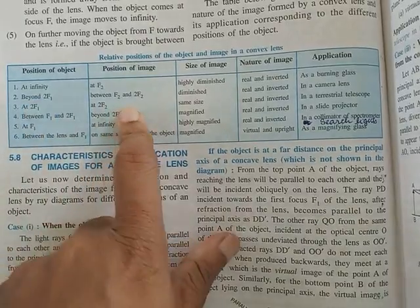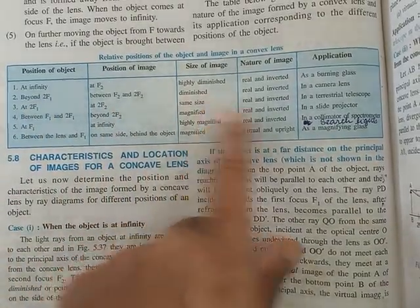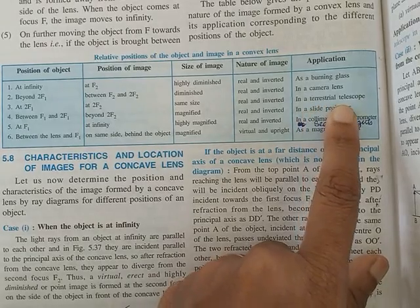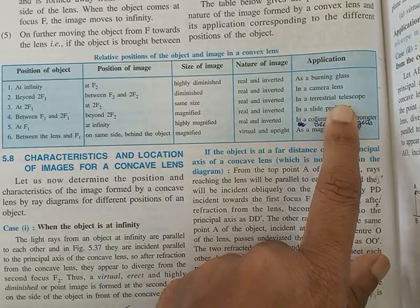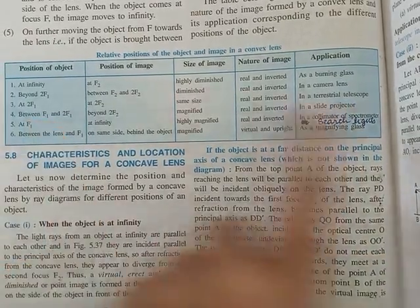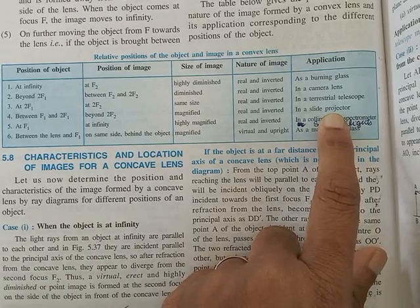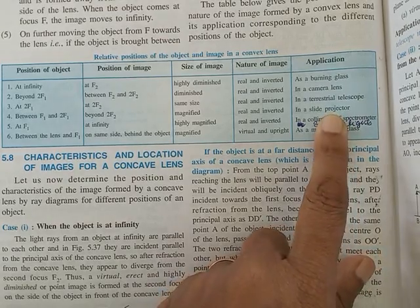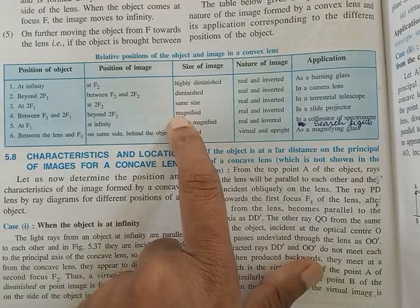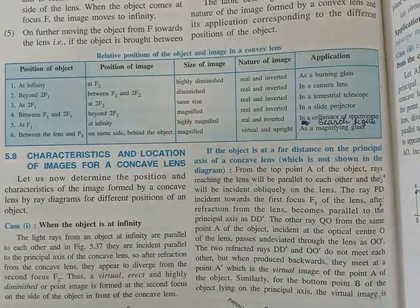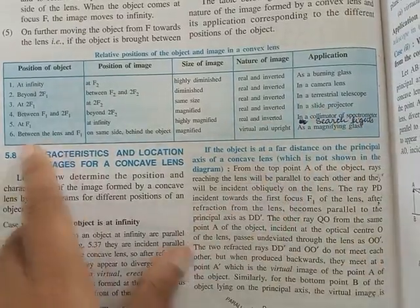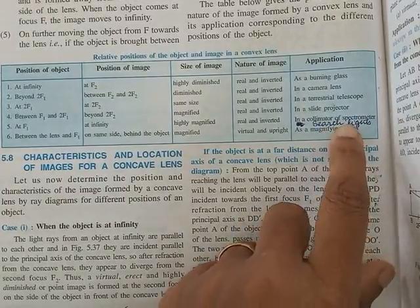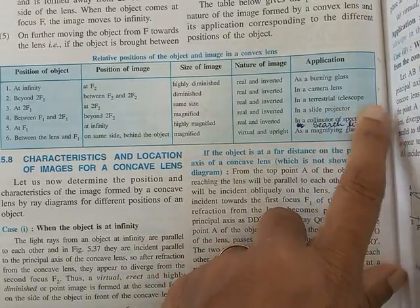Case one is used as a burning glass. Case two is used as a camera lens - when you want to capture an image of a distant object, you use case two. Case three is used in a terrestrial telescope. Case four is used in a slide projector - you've seen projectors hanging at the top in your classrooms. There we need a magnified image of a small object, so case four is used as a slide projector.